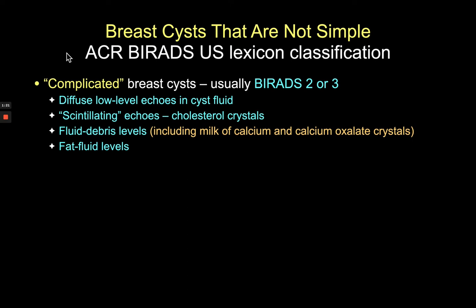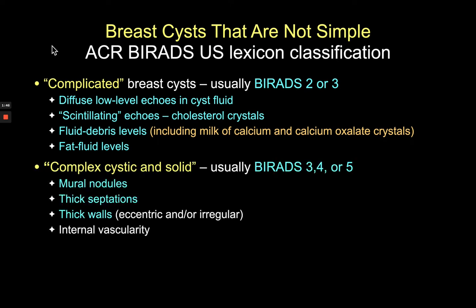In the ACR BI-RADS ultrasound lexicon, complicated cysts are more typically benign. Complicated cysts have internal echoes in the cyst fluid — this could be a fat fluid level, a debris level, scintillating echoes, or even dependent calcifications. These are usually BI-RADS 2 if they're multiple and incidental, or BI-RADS 3 if they're a dominant clinical or mammographic feature.